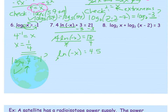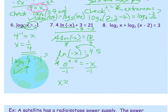With ln isolated, convert to exponential. Base is e, so e to the 4.5 power equals negative x. Divide by negative 1 to get x by itself. Type e^(4.5) into your calculator, then divide by negative 1. To the nearest hundredth, x equals approximately negative 90.02.